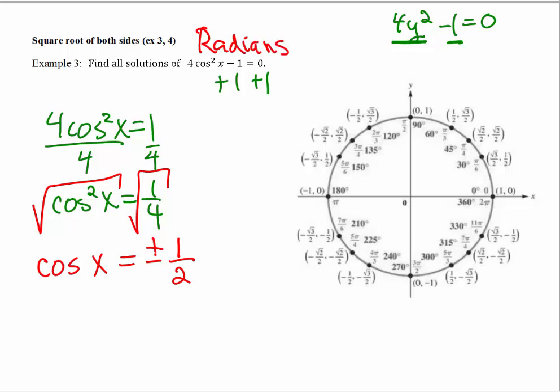So which quadrants are we going to be looking at? Well, we're looking for quadrants that have a positive cosine value, which would be quadrant 1 and quadrant 4, and also a negative cosine value, which would be quadrants 2 and 3. So we're looking for all angles that have this cosine value, positive 1 half and negative 1 half. And remember on our unit circle, that would be the π over 3 family, where that x value is 1 half.